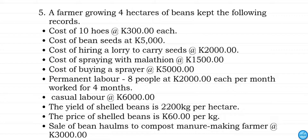The question reads: a farmer growing four hectares of beans kept the following records. The cost of 10 holes is 3,000 kwacha each. The cost of bean seeds is 5,000 kwacha. The cost of hiring a lorry to plant seeds is 2,000 kwacha. The cost of spraying with marathon is 1,500 kwacha. The cost of buying a sprayer is 5,000 kwacha. Permanent labor: 80 people at 2,000 kwacha each per month, worked for four months. The cost of casual labor is 6,000 kwacha. The yield of shelled beans is 2,200 kg per hectare, and the price is 60 kwacha per kg. Sales of bean husks to a compost-making farmer at 3,000 kwacha.